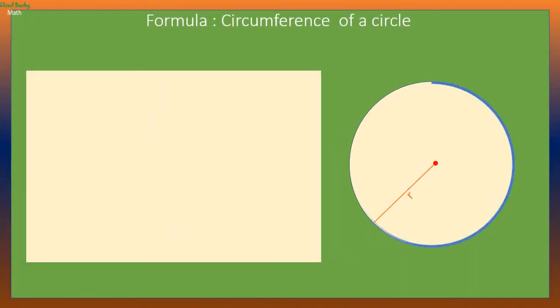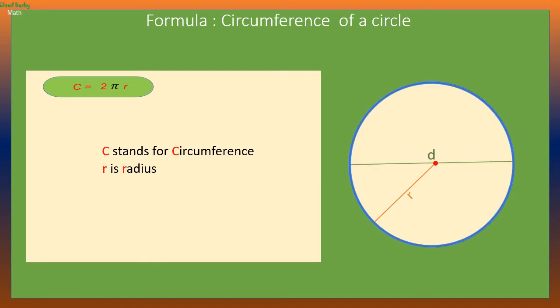To find the circumference we use the formula c equals 2 pi r. If we know the diameter we can use the formula c equals pi d.